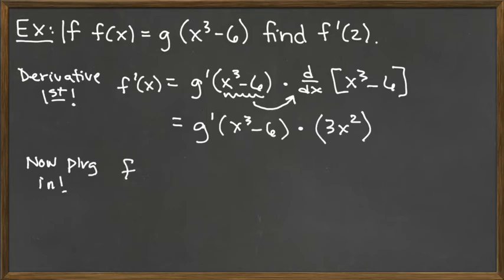So when we plug in, we have f prime of 2. We're plugging in 2 everywhere we see an x. So we see g prime of – and we see an x in there, so we will replace the x with 2. So we've got 2 cubed minus 6, and then we're going to multiply it by 3 times 2 squared.